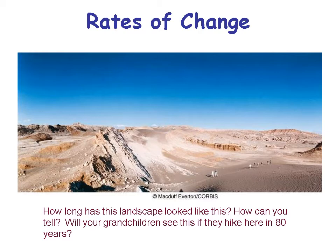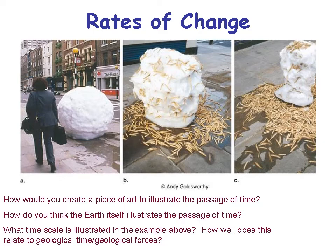Earth science: rates of change. Take a look at a landscape and ask yourself: how long has it looked like this, and will your grandchildren see it if they hike here in 80 years? Here's a piece of art meant to illustrate the passage of time: a snowball on the street, and over time the snowball melts, grain heads fall out, and the snowball is gone. How long did that take? It probably depended on temperature, but it was more than one day and probably less than two weeks.